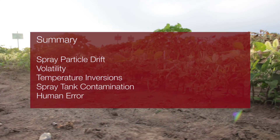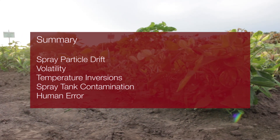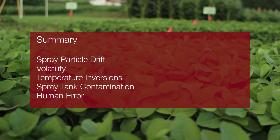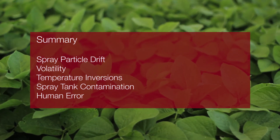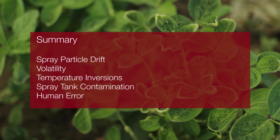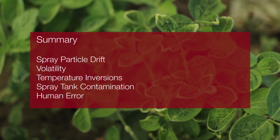In summary, the various ways 2,4-D and dicamba can move off target include: particle drift, volatility-type vapor movement, inversions causing small particles to drift long distances, spray tank contamination, and human error — simply using the wrong chemical on the wrong field.